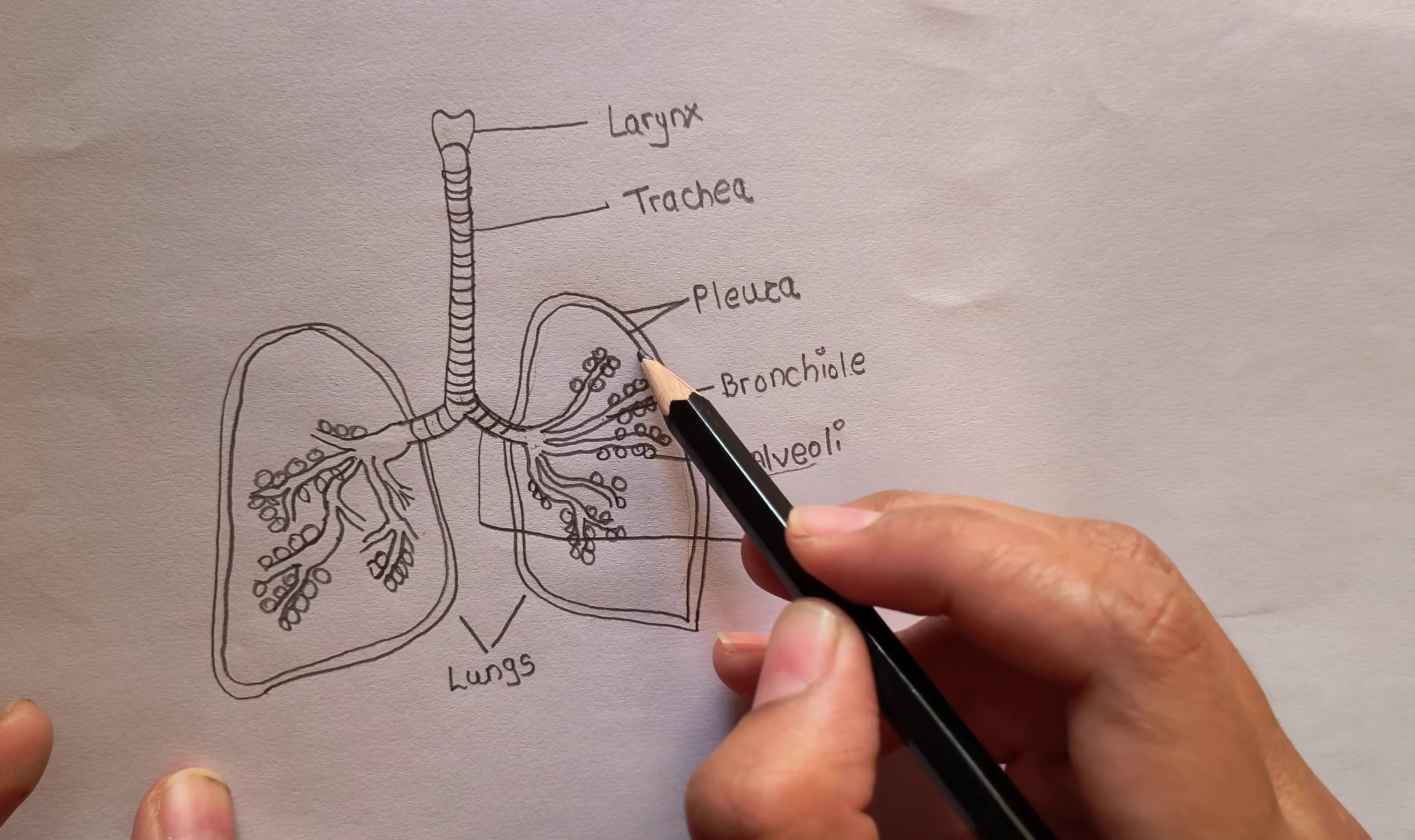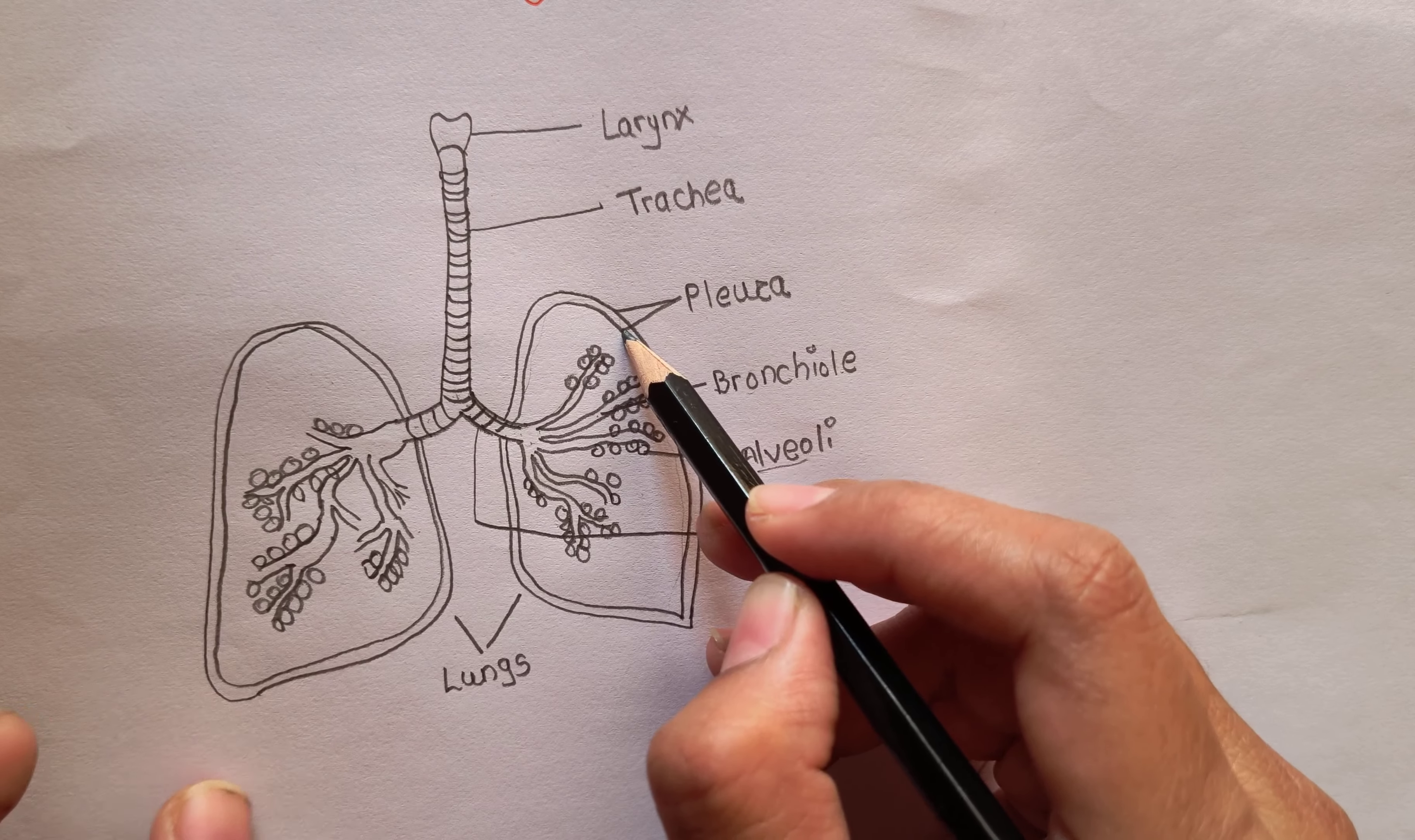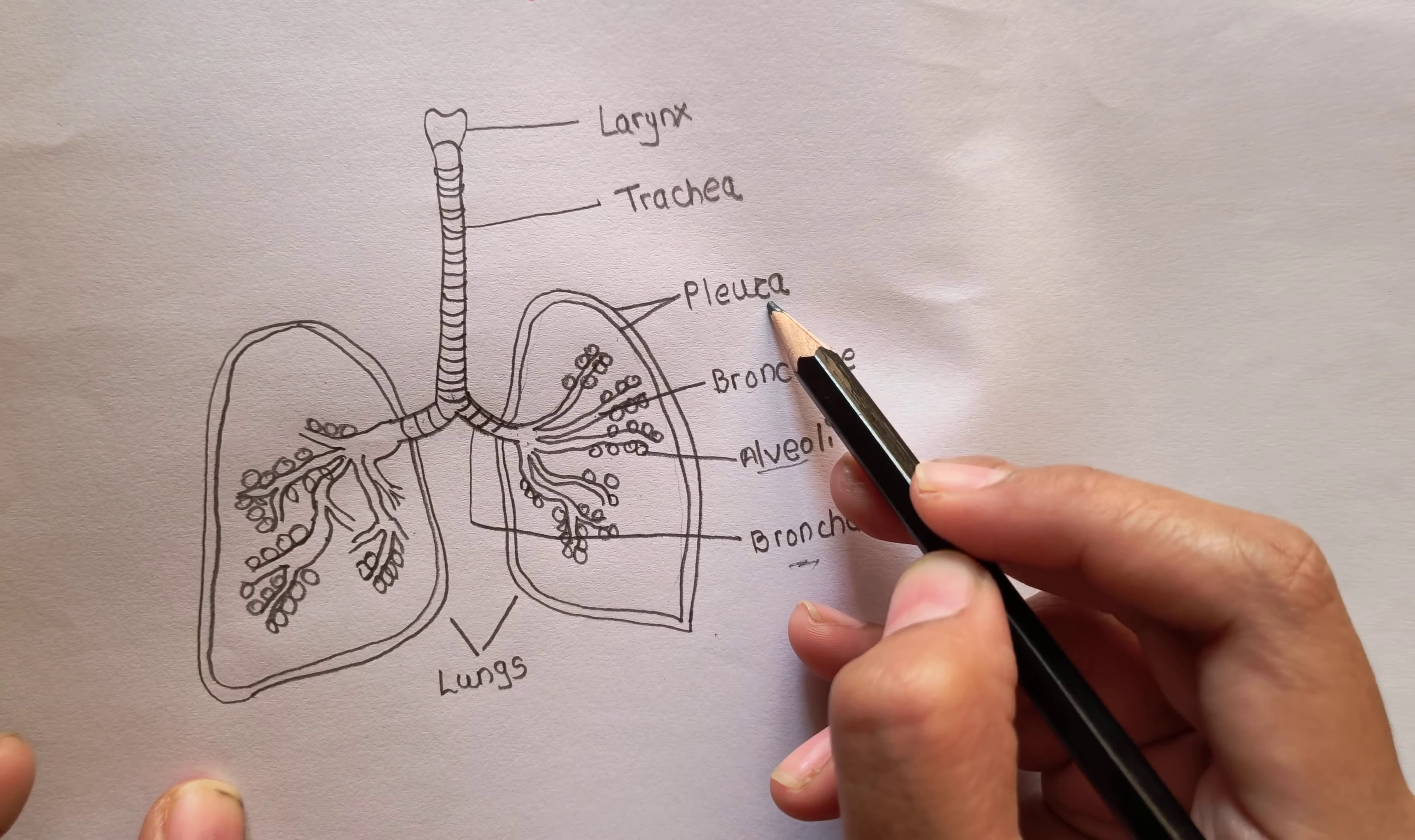The lungs are covered by two layers. Those two layers are called pleura.